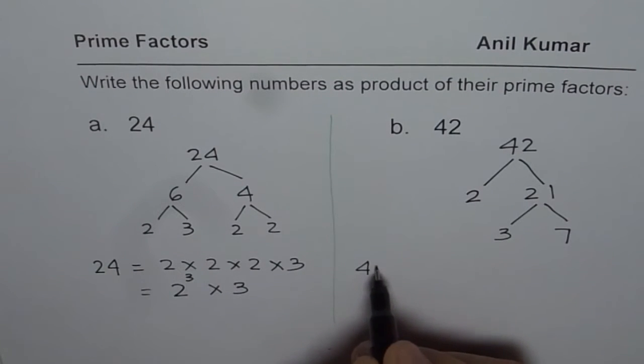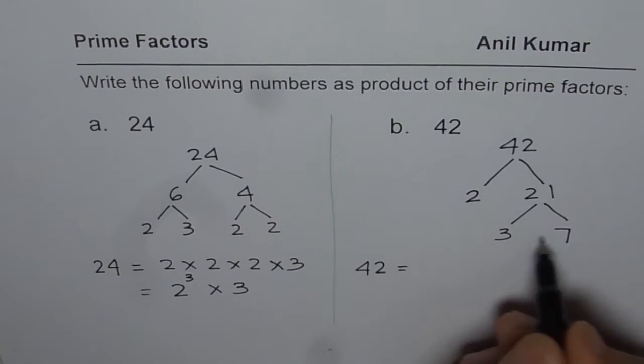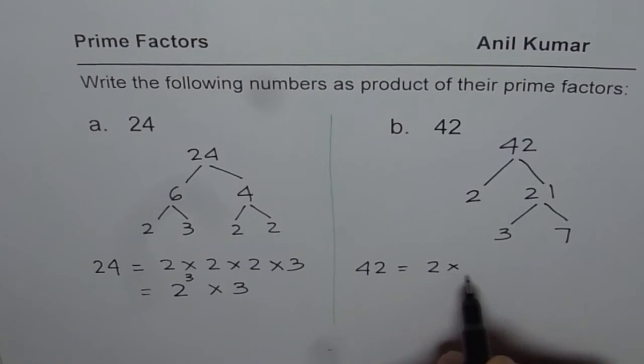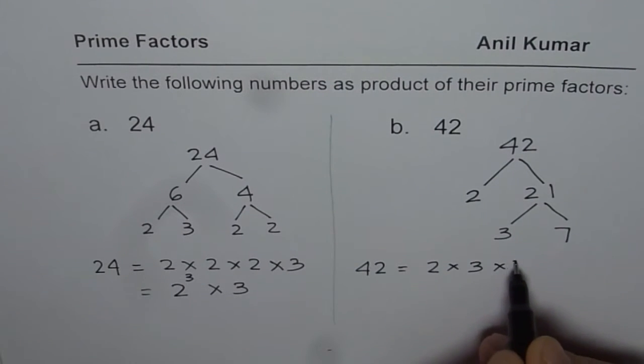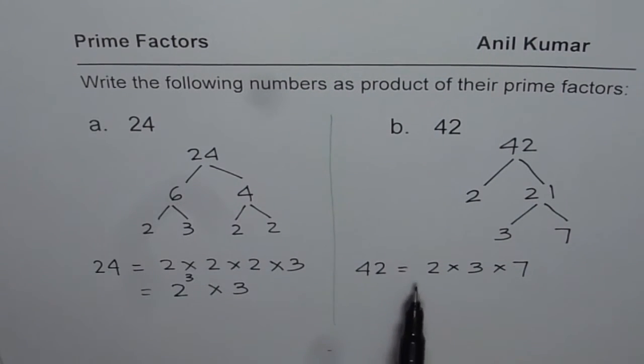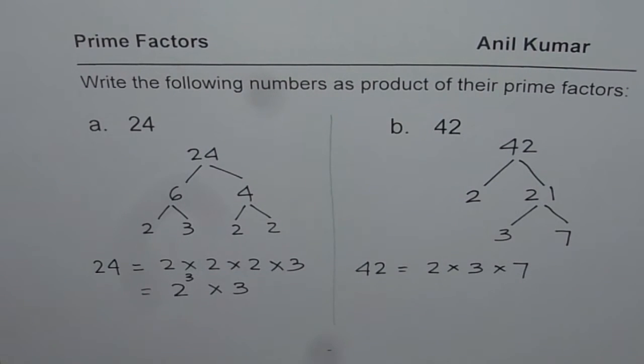And 42 now can be written as their product, which is 2 times 3 times 7. So you can always multiply and check: 2 times 3 is 6, and 6 times 7 is 42. So that is how you can actually write down any number as product of its prime factors.